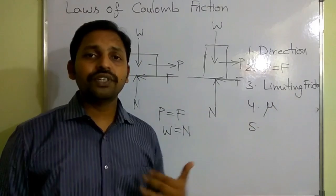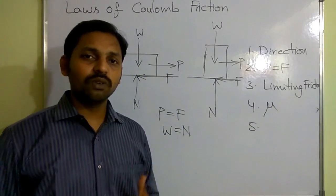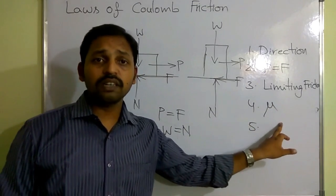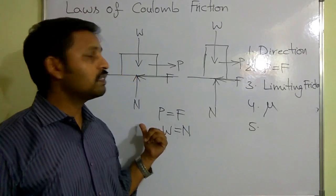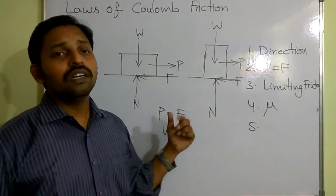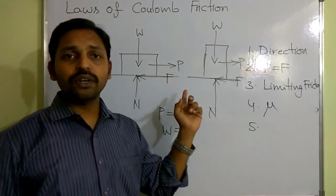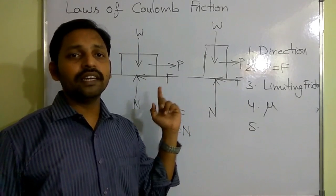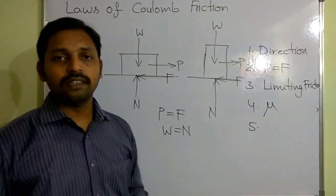The fourth law states that the frictional force always bears a constant ratio to the normal reaction, which is called the coefficient of friction. The fifth law is that friction is independent of size, shape, and area of surface contact.